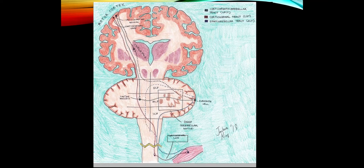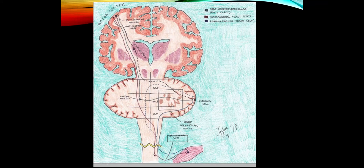So now the cerebellum knows the intended movement and the actual movement, and complex processing occurs. That output goes through the superior cerebellar peduncle, up through the VL (ventrolateral nucleus) of the thalamus, and back to the motor cortex — all instantaneously so that your motor cortex can precisely coordinate movement. The cerebellum talks to upper motor neurons like the motor cortex and brainstem nuclei, but its effect on movement is indirect.